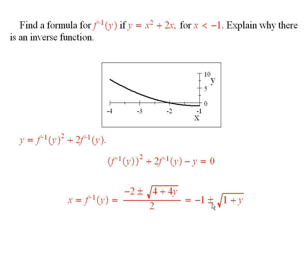So what I have to have is to pick the negative choice here. Otherwise, it would not always be less than minus 1. So then this is the formula for our inverse function: f inverse of y equals negative 1 minus the square root of 1 plus y.